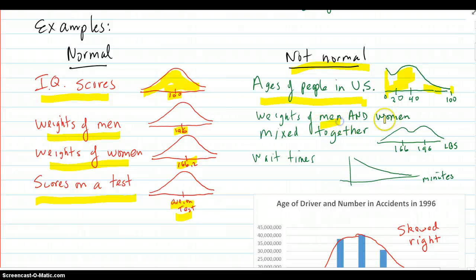The weights of men and women put together in the same distribution - that's not normal anymore because you have two centers or modes there. Two modes where there's a lot of data here from the women and here from the men. Wait times are not normally distributed. You're not going to have a high amount of long wait times, and then some out here - very long but few of those. So that's skewed to the right.